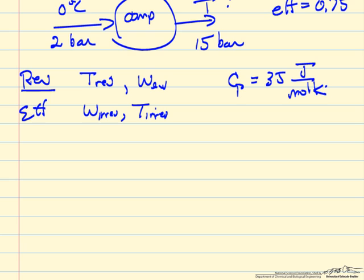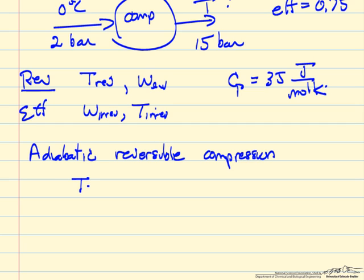The first step is, let's do the calculation for an adiabatic reversible compression. And this means we can use the equations that we derive for adiabatic compression that relate temperature and pressure, and those equations that we can look up in the thermodynamics textbook.